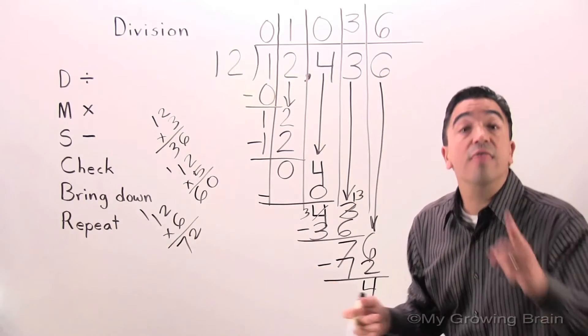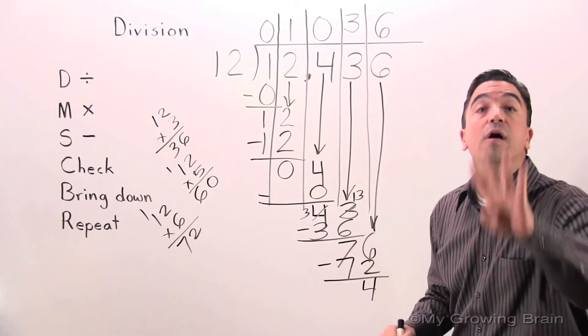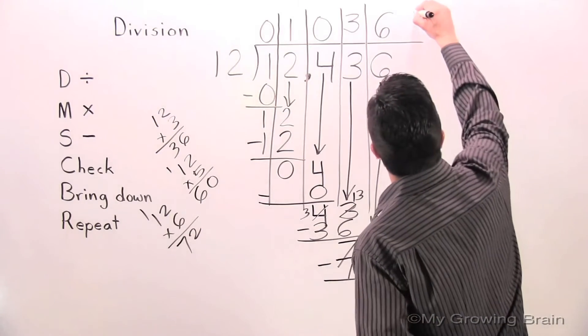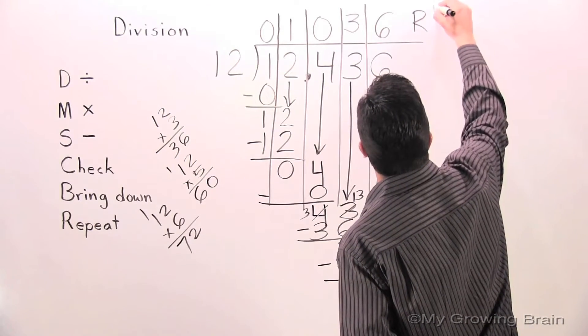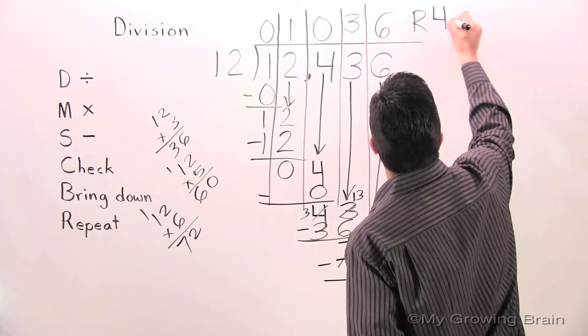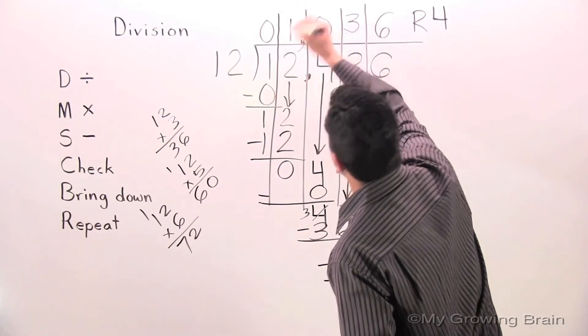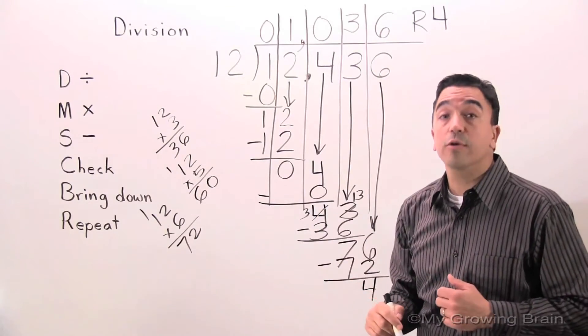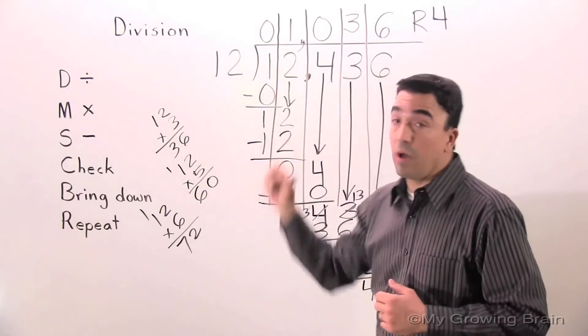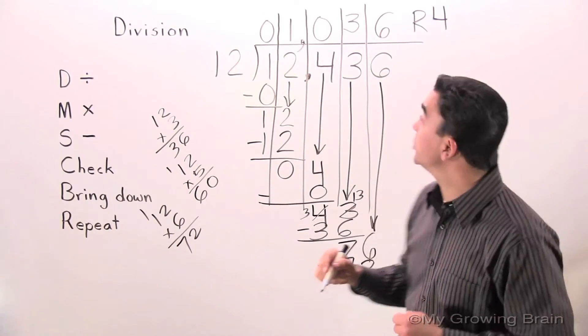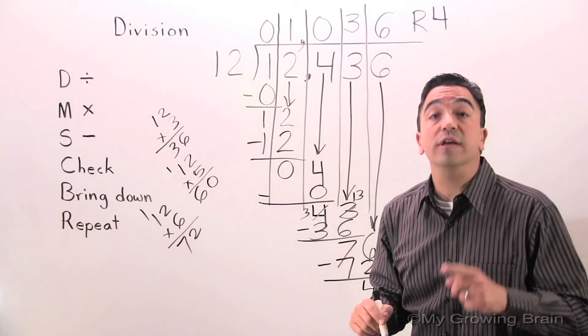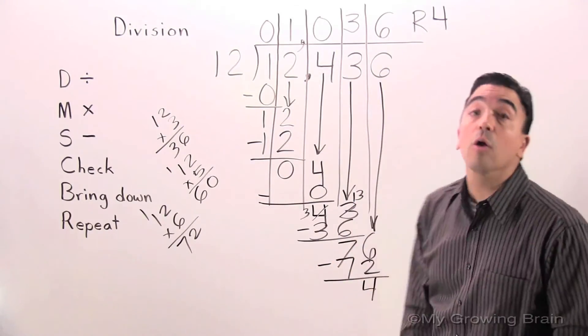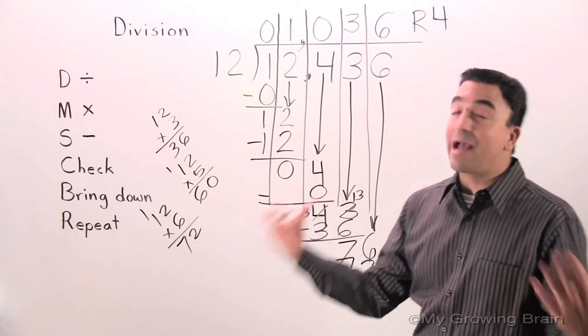There's nothing to bring down. Therefore, we have a remainder of 4. So, this means that 12,436 divided by 12 is equal to a quotient of 1,036 remainder 4. That concludes our lesson on division.